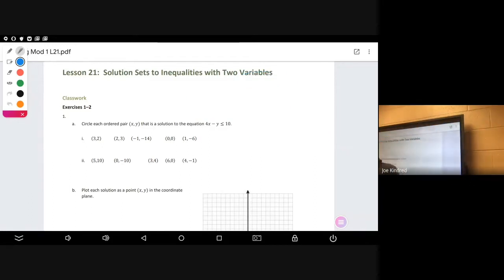Here in the first exercise it says circle each ordered pair x and y that's a solution to the equation 4x minus y less than or equal to 10. Break your calculator out and do a quick substitute. Let's check 3 and 2. If we plug 3 in times minus 2, is that less than or equal to 10? We check and the answer is yes, so circle.